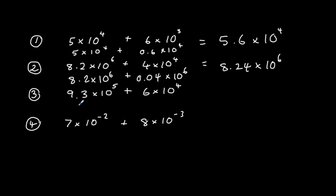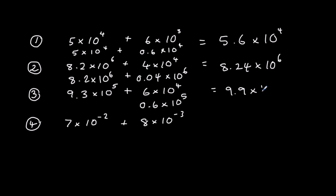Here we've got 9.3 times 10 to the power of 5. I'm going to keep that one and change the other to 0.6 times 10 to the power of 5. So 9.3 plus 0.6 is 9.9 times 10 to the power of 5.